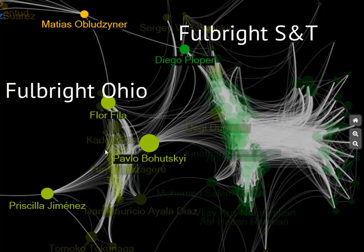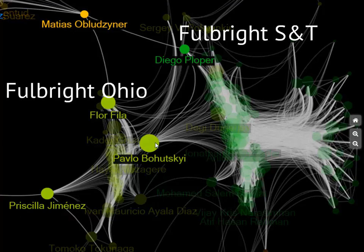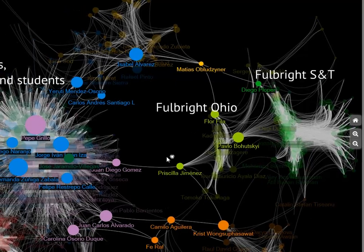Next you have the Fulbright friends. The light green cluster represents the Fulbright people I met in Ohio when I first came to the US for the introductory seminar. On the right are the Fulbright S&Ts — my same class and older S&T cohorts. Interestingly, Pablo is both a Fulbright S&T and someone I met in Ohio, so he's identified with that cluster and serves as a key connection between both groups. Priscilla, meanwhile, connects my Fulbright Ohio friends to my home friends cluster.